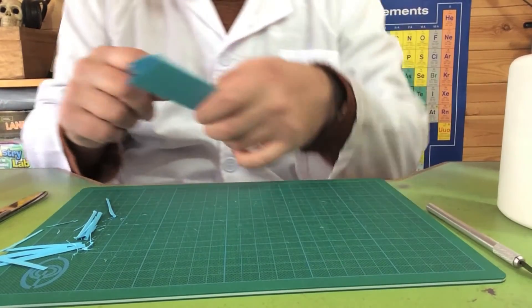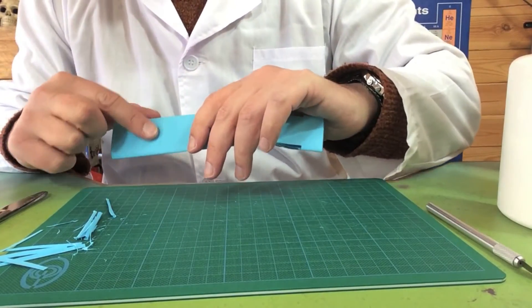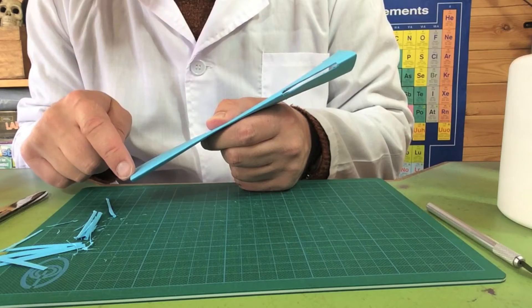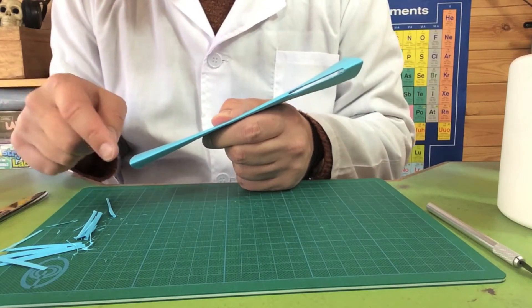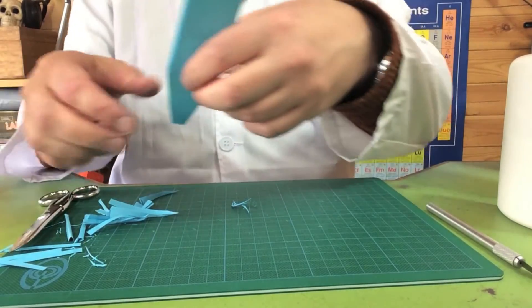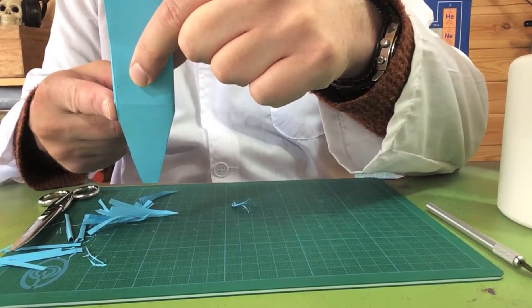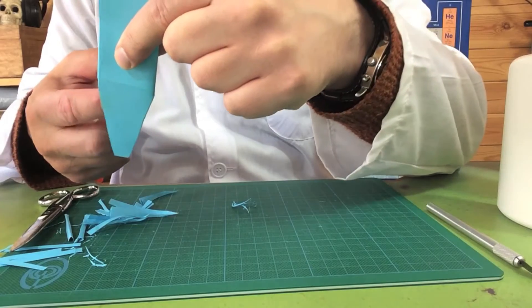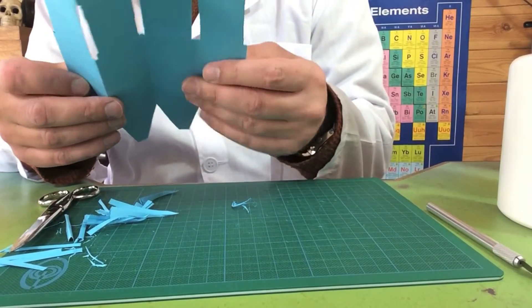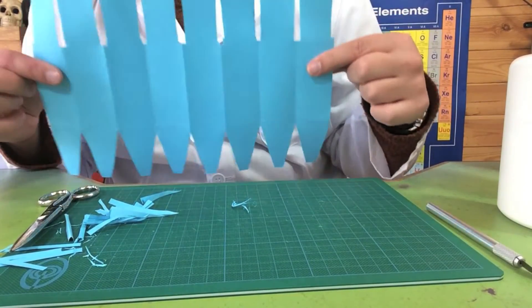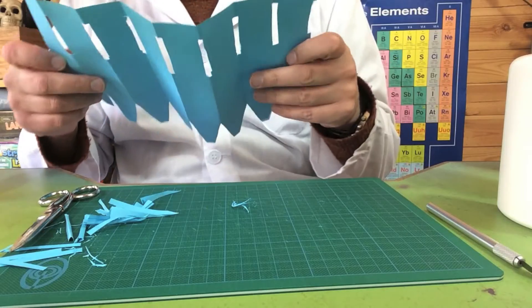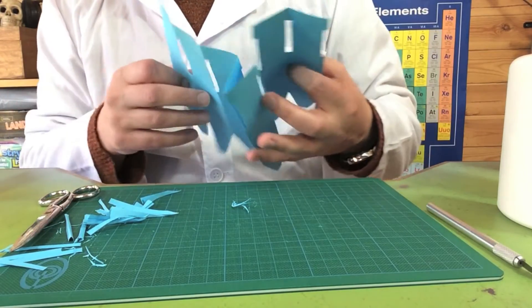Now, you remember the line that we folded along here. Well, what we're going to do is we're going to cut from the corner down to the bottom in a diagonal shape, so that the cuts go right the way up to the line. And you should end up with something that looks like this. Now, that's great, but you need two of them. So let's do it again.